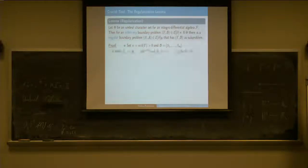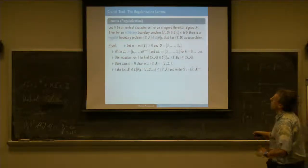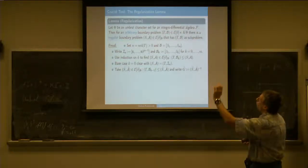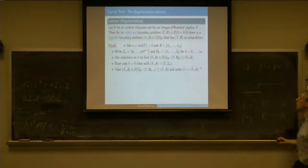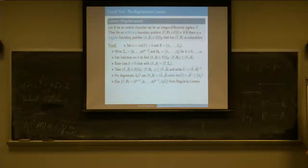This proof really needs the umbrality of the boundary conditions, because it uses the theorem shown before: if I increase the order of D sufficiently, then I get the regular super-problem. That's where this is used—it comes from the regularity lemma, which in turn relies on umbrality.